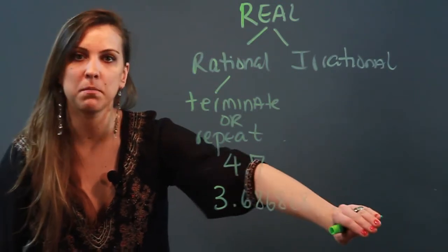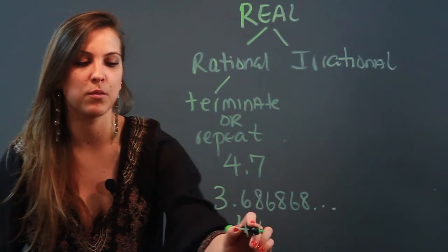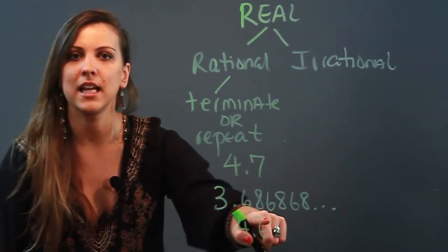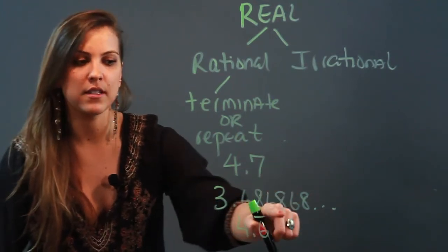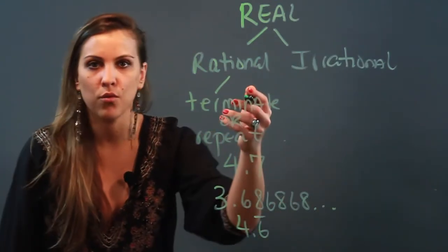It goes 6868, so there's a continuous pattern. And by that same token I can write a number like 4.6 with a bar over it, and that indicates repeating. So because all of these numbers either repeat or terminate—it can never do both but it's got to do one of them—they're considered rational.